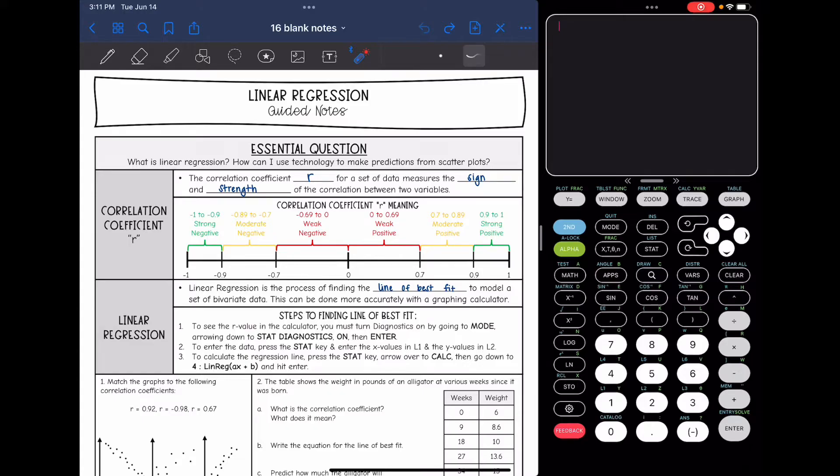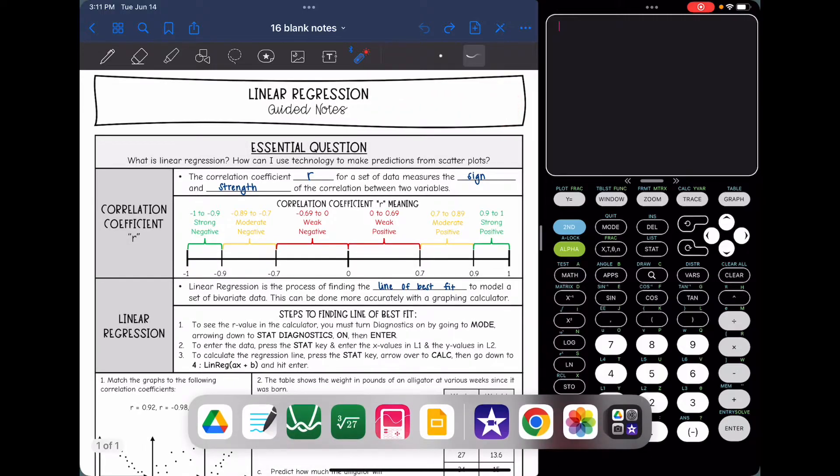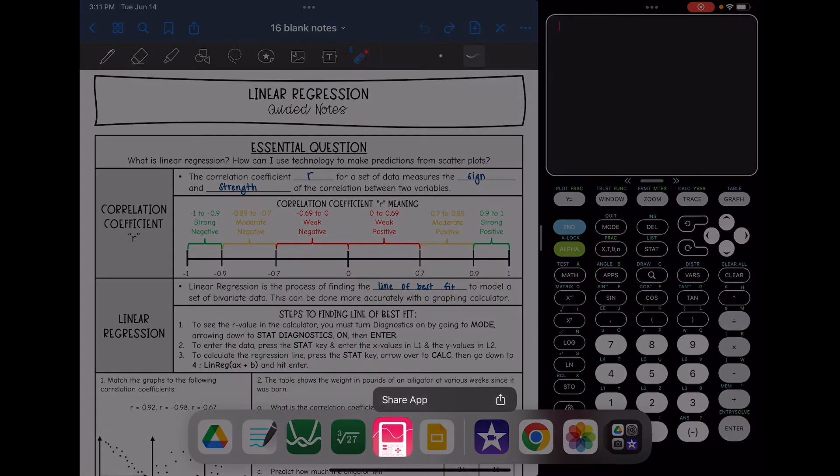Linear regression is a way to do the line of best fit with technology so that it is accurate, so we're not having to freehand it. I find this easiest to do on TI-84 calculators. This right here that I have pulled up is the app called Calculate84, it's this little pink one, and it's going to look a little bit different than the TI-84s do, but it does the same thing.